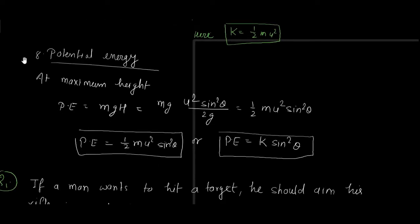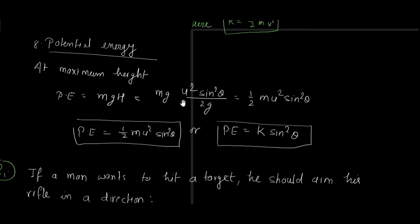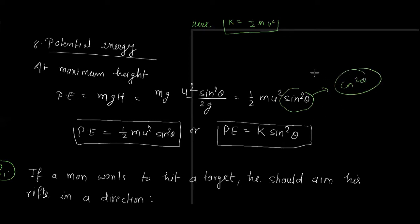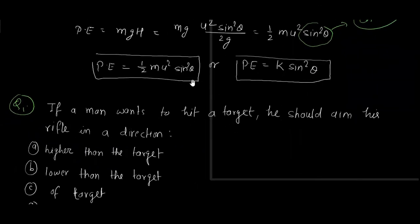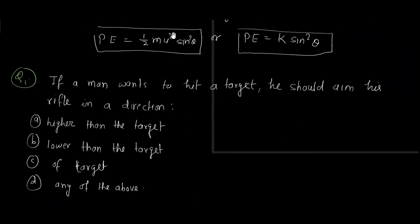Potential energy at maximum height is mgh. Substituting H = u²·sin²θ / 2g, after simplification we get PE = ½m·u²·sin²θ. A useful memory trick: in the kinetic energy expression k·cos²θ, replace cos²θ with sin²θ to get potential energy. Both expressions share the same ½mu² base; only the trig function differs.